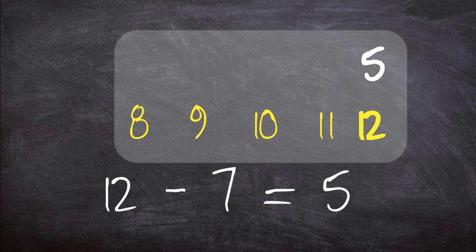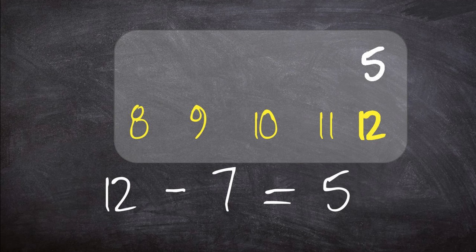Because we counted up 5 until we got to 12. And that is how you use counting up, which is addition, in order to perform subtraction.